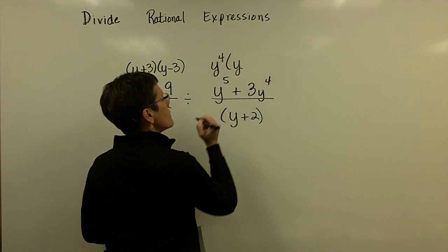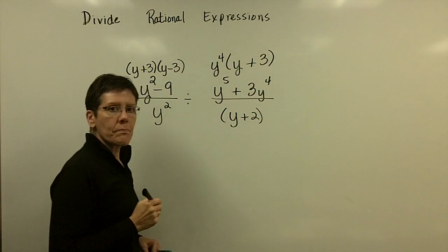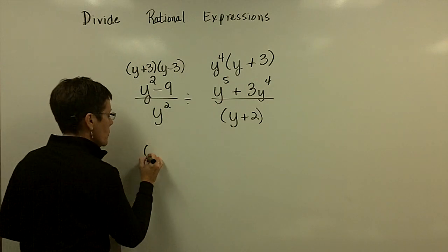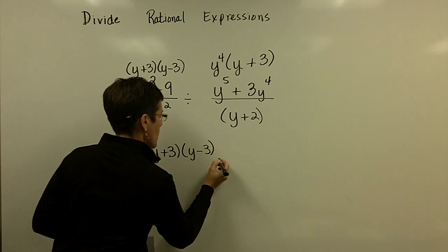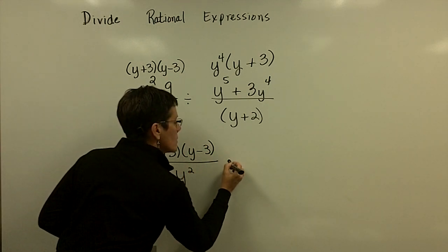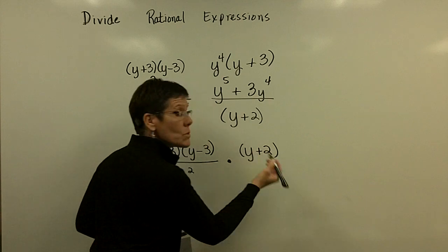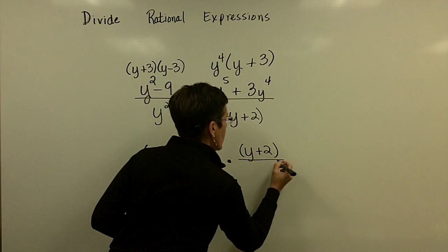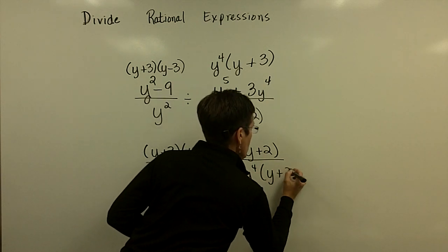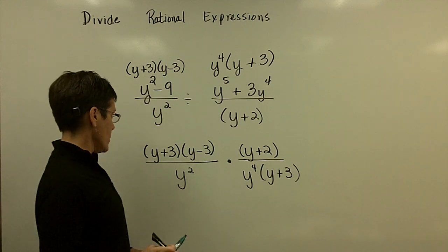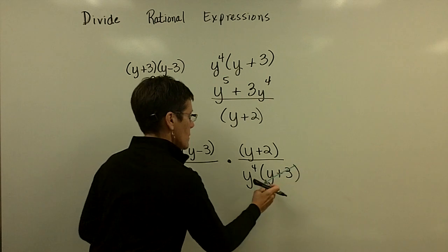Now I'm ready to rewrite the problem. The first fraction is rewritten as-is: y plus three times y minus three over y squared. Then I multiply by the reciprocal of the second fraction, so y plus two goes upstairs and y to the fourth and y plus three go downstairs. Now I can start removing common factors — y plus three here and here cancel to one.